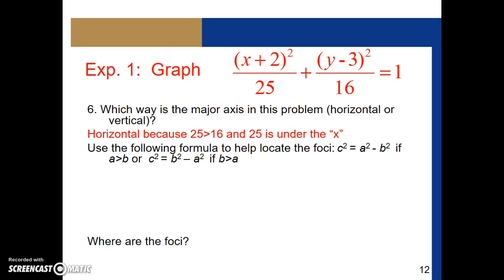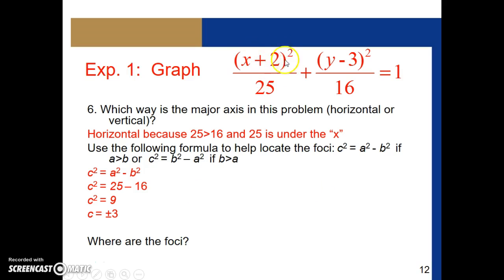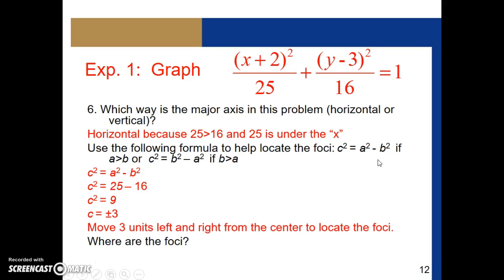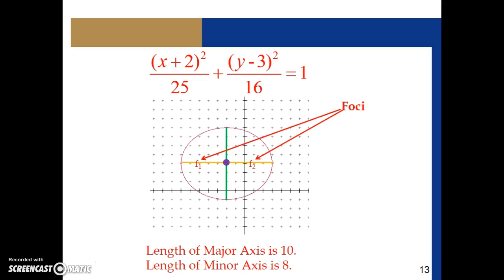The major axis is horizontal because a is bigger than b. Using the formula, c² equals a² minus b² = 25 − 16 = 9, so c equals ±3. Both foci lie on the major axis, so we move 3 units horizontally from the center x-coordinate of −2: going +3 and −3 gives foci coordinates of (1, 3) and (−5, 3). That's everything we need to know about this ellipse.